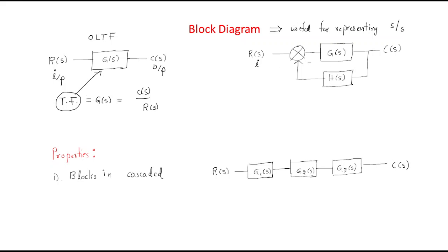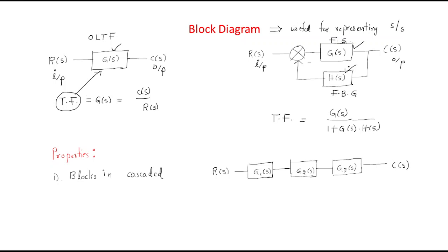For the closed-loop transfer function, the system has an input, an output, a forward gain or open-loop gain, and a feedback gain. For this closed-loop system we can write the transfer function as G(S) by 1 plus G(S) into H(S). Simply, any system's gains can be represented in terms of blocks — this representation is known as the block diagram.